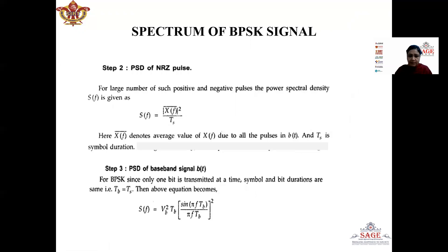Now to find the spectrum of the BPSK signal, we need to find the power spectral density of this pulse. The power spectral density S(f) is given by the square of the Fourier transform of the pulse divided by Ts, where Ts is the duration of one symbol. Substituting the value of X(f), the PSD S(f) equals Vb² · Tb · [sinc(πFTb)]². Since it is a BPSK signal, the symbol duration and bit duration are both equal, so Ts equals Tb, and one Tb cancels, leaving only Tb in the result.